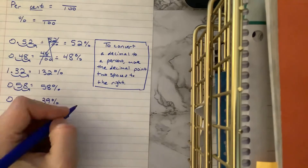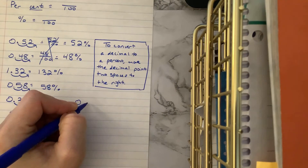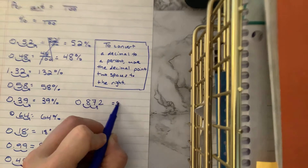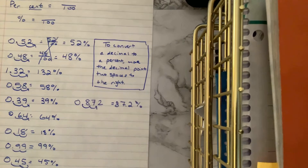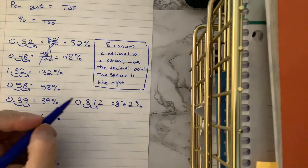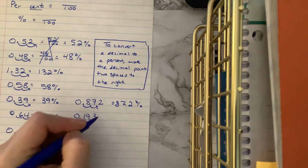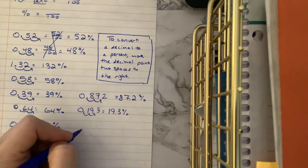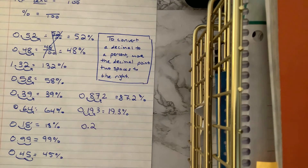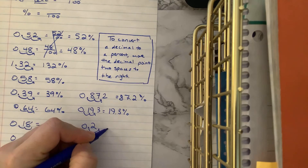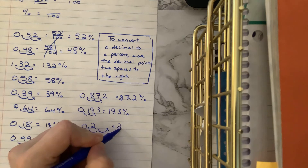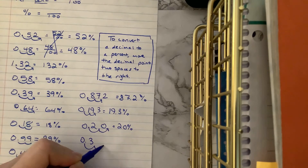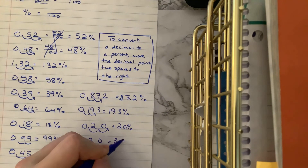If we have a decimal with more place values, like eight hundred seventy-two thousandths, we still just go one, two spaces to the right and we get eighty-seven and two tenths of a percent. Yes, percentages can have decimals in them. Or if we had one hundred ninety-three thousandths, we'd get nineteen and three tenths of a percent. If we have just one decimal place, the rule still applies — we move one, two, and if there's an empty spot we fill it in with a zero. Two tenths becomes twenty percent. Three tenths becomes thirty percent.